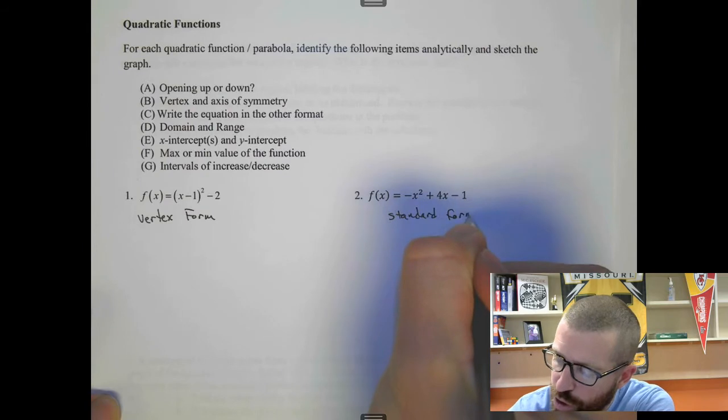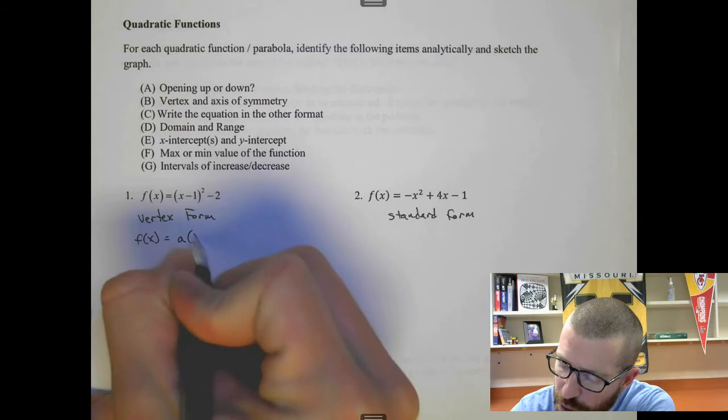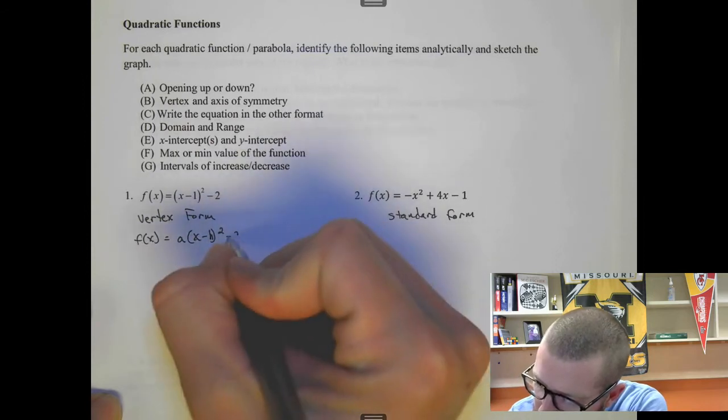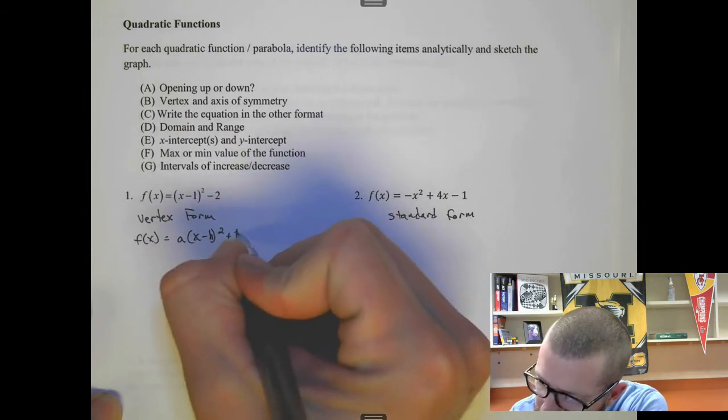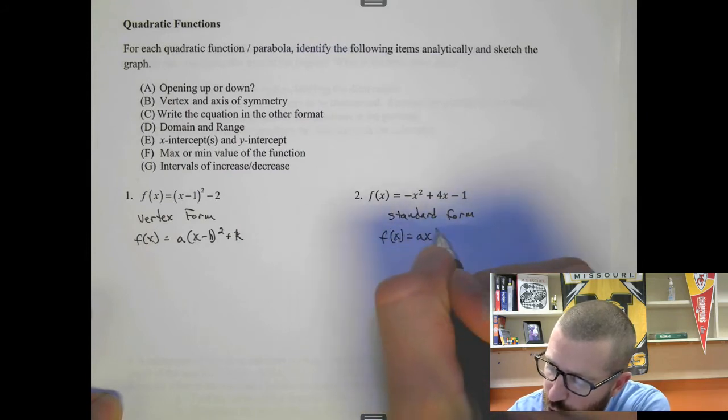These are in two different forms. Number one is what's called vertex form, and this is just the general form or standard form. For each of these, we could write these with letters. So this is f(x) = a(x - h)² + k, and this one would be f(x) = ax² + bx + c.